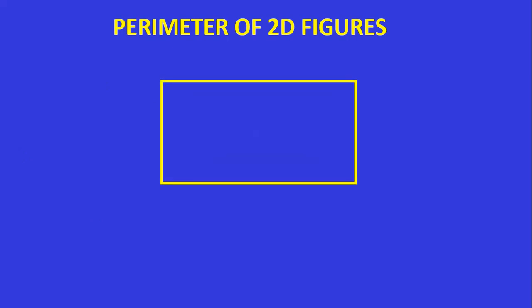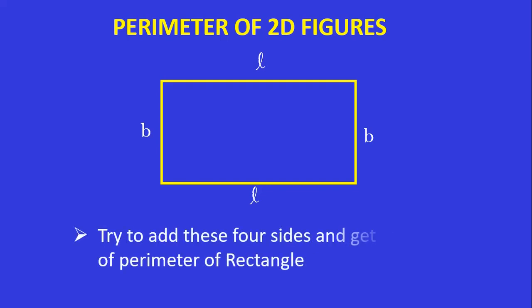Now let us take another 2D figure. Do you know the name of this figure? L is the length and B stands for breadth. There are 2 lengths and 2 breadths. Try to add all four and write the formula for the perimeter of this rectangle. There are 2 lengths and 2 breadths. This is an open-ended task for you, children — write the formula for the perimeter of a rectangle.